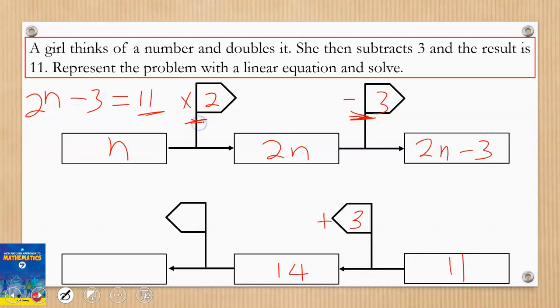Then here we did multiplication, so we're going to do division by 2. Divide 14 by 2, you have 7. Therefore, n = 7. Good, I'm sure you're making progress.